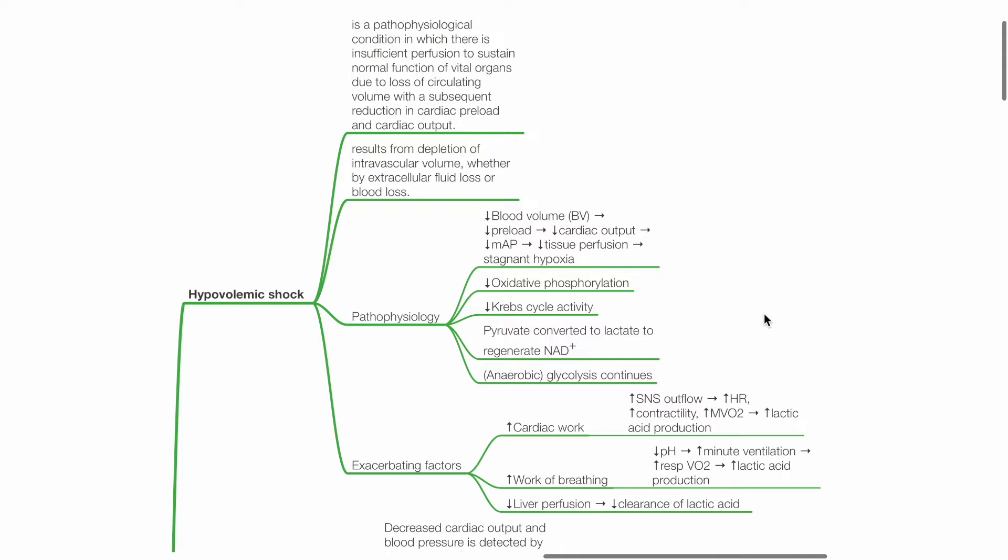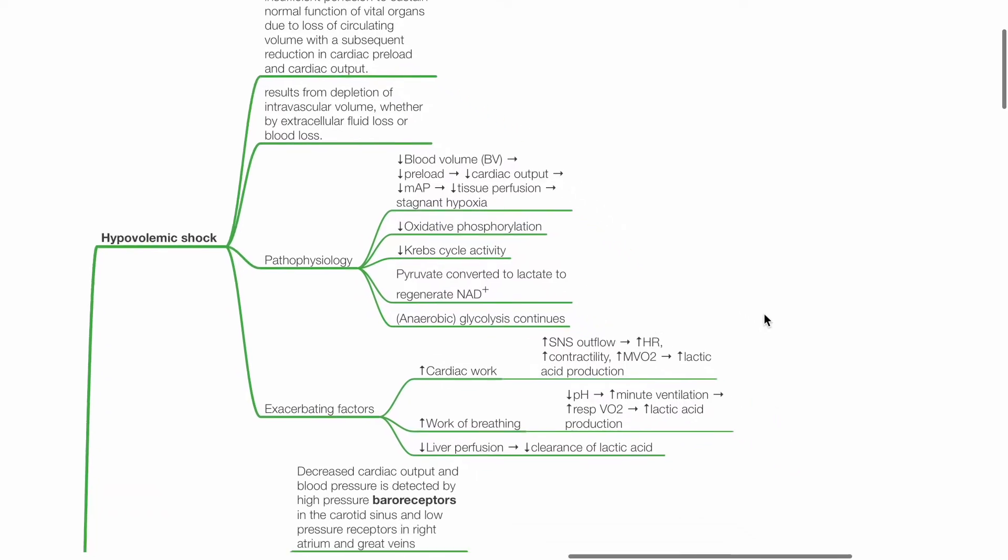Pathophysiology: Reduction in blood volume results in reduced preload, reduced cardiac output, reduced MAP followed by reduced tissue perfusion and stagnant hypoxia. There is reduced oxidative phosphorylation, reduced Krebs cycle activity. Pyruvate is converted to lactate to regenerate NAD to produce ATP. Anaerobic glycolysis ensues.